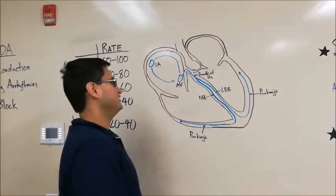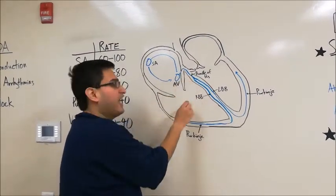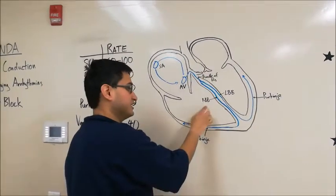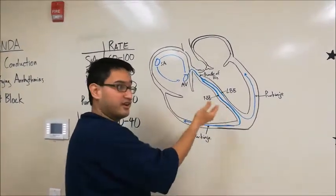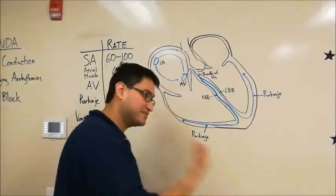The idea is that the atria will help push some blood into the ventricles, and then the ventricles contract to push it into the pulmonary and systemic circulations. So this AV node conduction slowdown is crucial to normal cardiac physiology. From here, the impulse will travel from the AV node to the bundle of His. At this point, it will split into the RBB, the right bundle branch, and the LBB, or the left bundle branch.